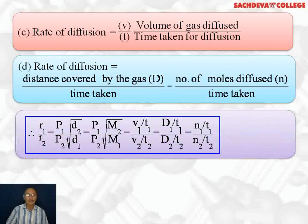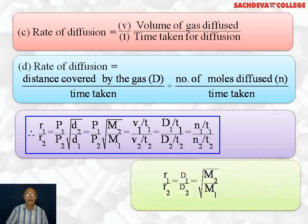R1 over R2 is equal to P1 over P2 into square root of D2 over D1, which equals P1 over P2 into square root of M2 over M1, which equals V1 over T1 divided by V2 over T2, or equals D1 over T1 divided by D2 over T2, where D1 and D2 are distances moved by gases 1 and 2, which equals N1 over T1 divided by N2 over T2, where N1 and N2 are number of moles of gases diffused and T1 and T2 are times in which gases are diffused.